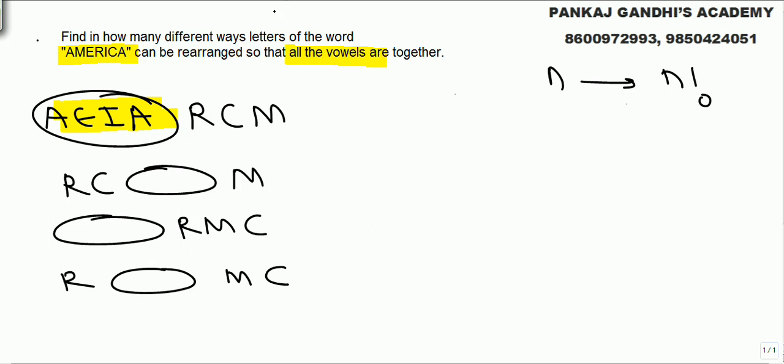But inside these vowels they can be arranged as A, A, E, I or A, E, I, A or E, A, I, A - various options are there. These arrangements will come. Total in all, 12 things will come. I will not be able to write all those 12 here.